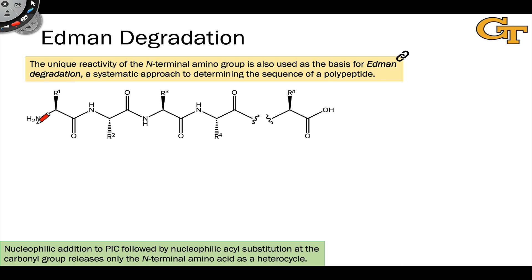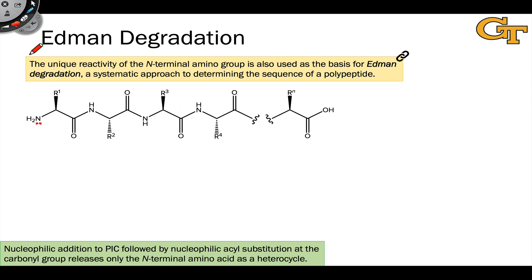Ignoring the side chain of lysine, the N-terminal amino group of a polypeptide chain is by far the most nucleophilic nitrogen-containing group in a polypeptide. We can take advantage of the nucleophilic reactivity of the N-terminus to selectively cleave a polypeptide at the N-terminus and determine its sequence by degrading the N-termini one by one, walking along the polypeptide chain until we get to the other end.